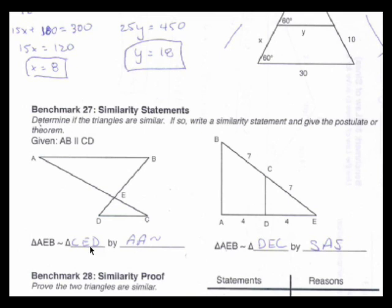But I need to write the similarity statement, because angle A is listed first in the upper triangle, that corresponding angle is going to be angle C. So that needs to be listed first for my similarity statement. E is next, and followed by B finally. So B is up here, and the corresponding angle is D down on the smaller triangle.